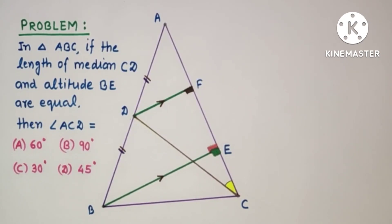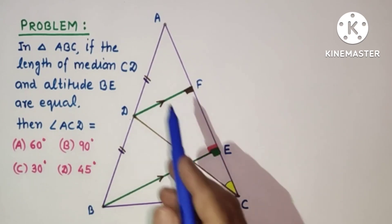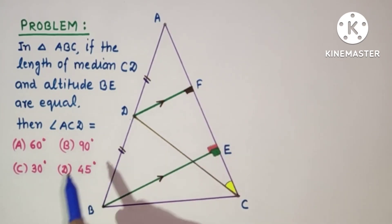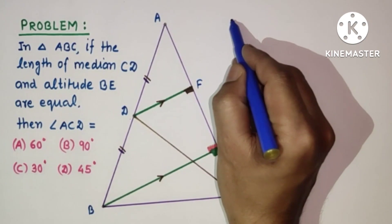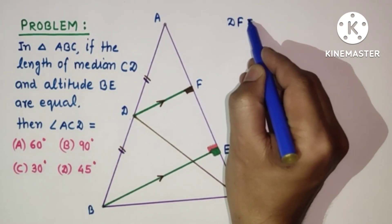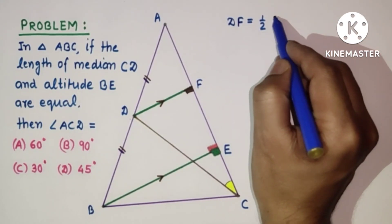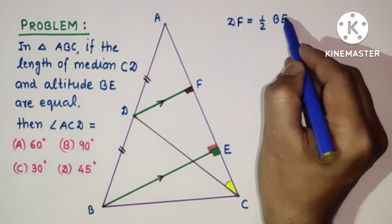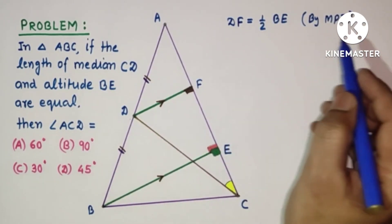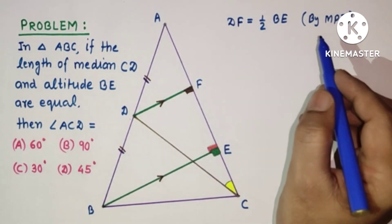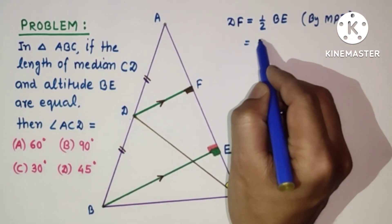So from here we can use either trigonometry to get this angle ACD or we can use geometry. DF is equal to half BE by midpoint theorem, and that is equal to, BE is equal to CD, so half CD.